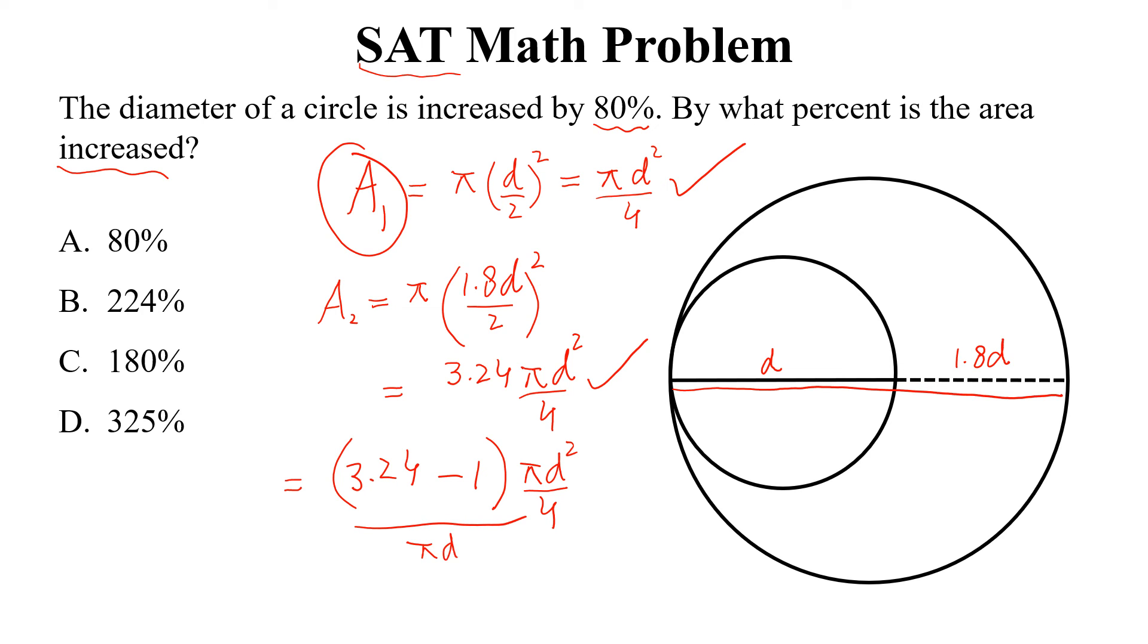A1 is pi d square divided by 4 multiplied by 100. So this is cancelled with this, and 3.24 minus 1 is 2.24 multiplied by 100. This is equal to 224% and this is the required answer.